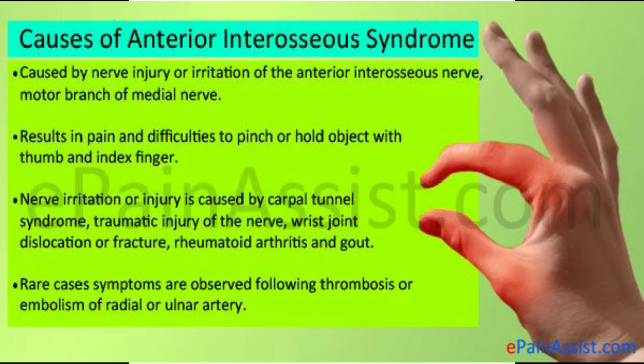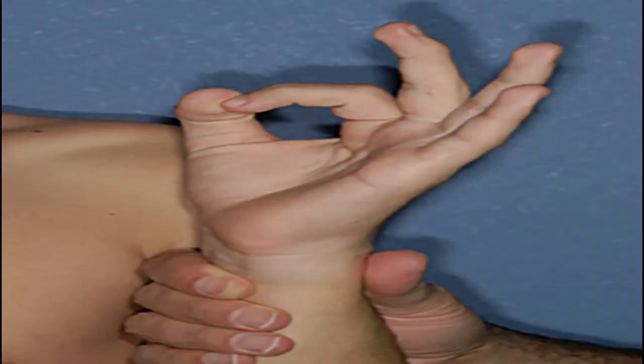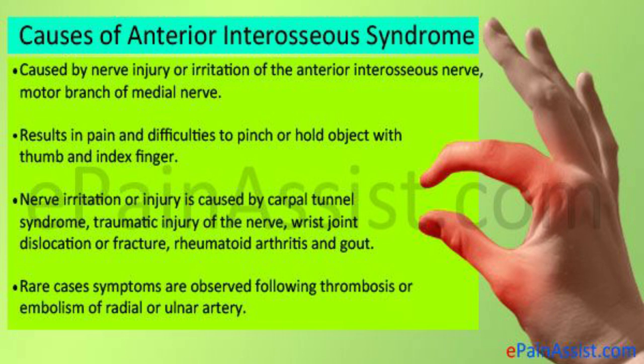The next one is anterior interosseous syndrome. The characteristic sign is seen when you ask the patient to make an OK sign — a circle with the thumb and index finger. They are unable to do this because the thumb and index finger cannot flex at the interphalangeal and distal interphalangeal joints respectively. This is caused by damage to the anterior interosseous nerve.